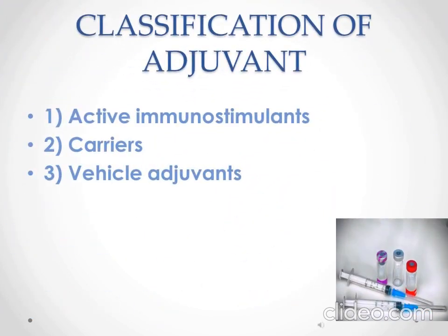Adjuvants can be classified according to their source, mechanism of action, physicochemical properties, or administration route — namely mucosal or parenteral. The three major categories are: active immunostimulant adjuvants, which increase the immune response to the antigen; carrier adjuvants, which are immunologic proteins that provide T-cell help; and vehicular adjuvants, which are oil emulsions or liposomes that serve as a matrix for antigen as well as stimulating the immune response.